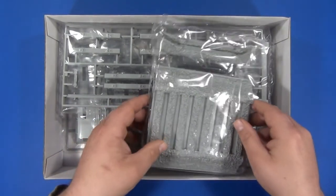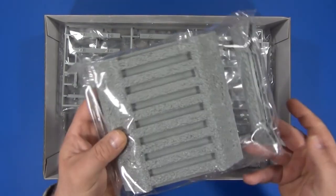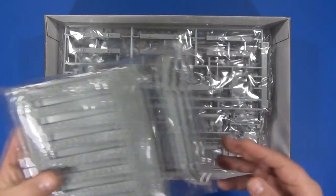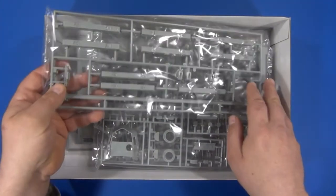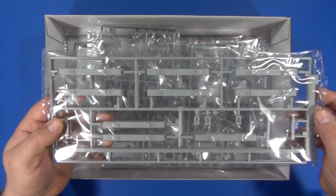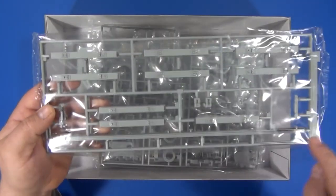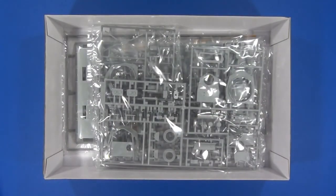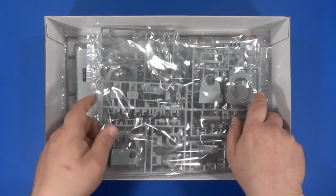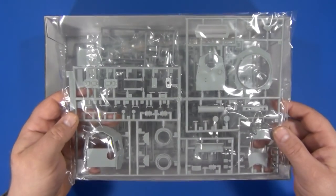Starting things off, we have the railroad base. These sprues here contain the railroad ties, track sections, and couplers.